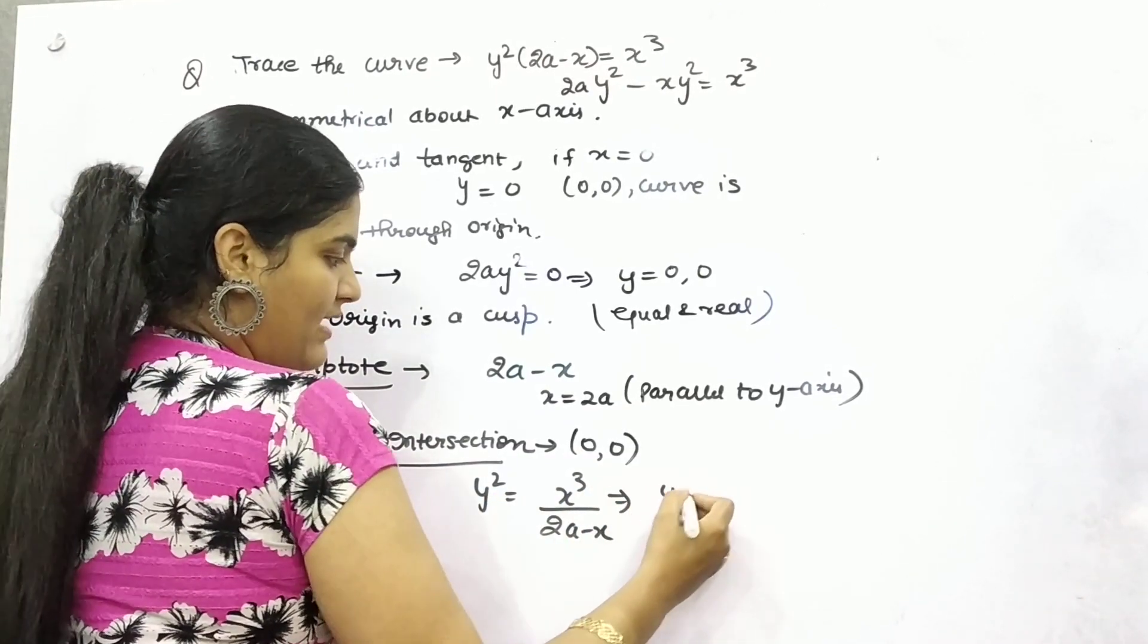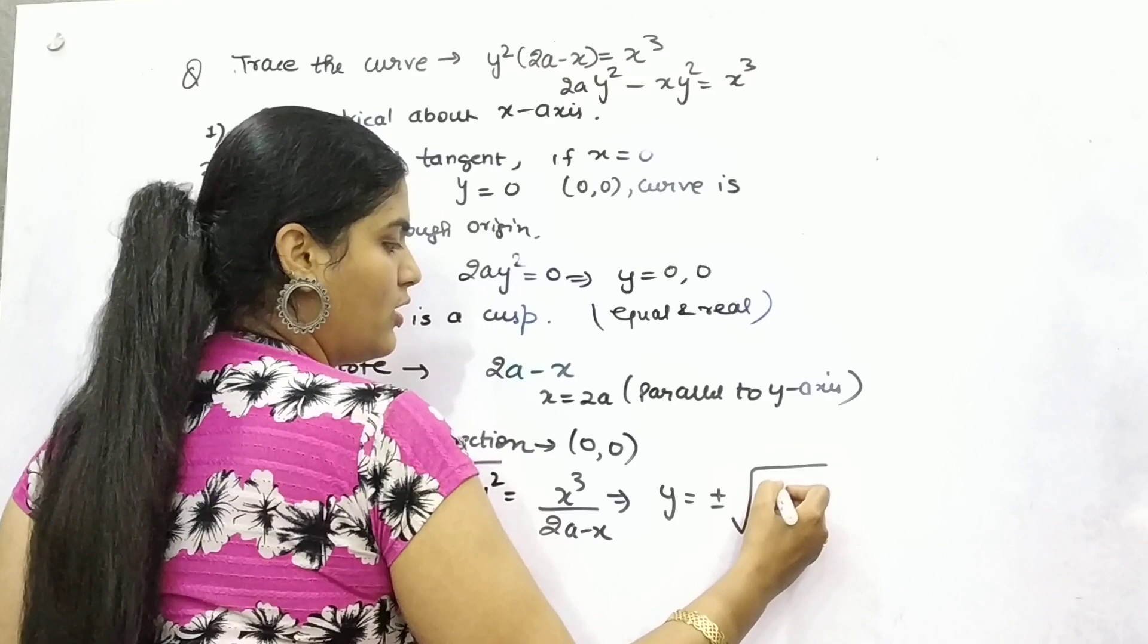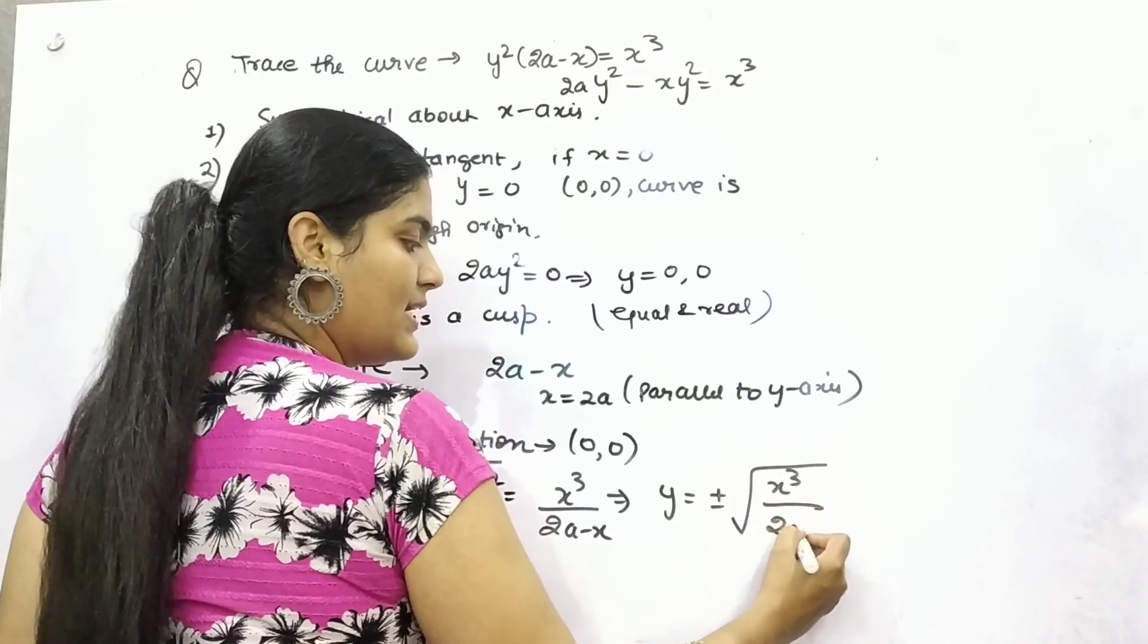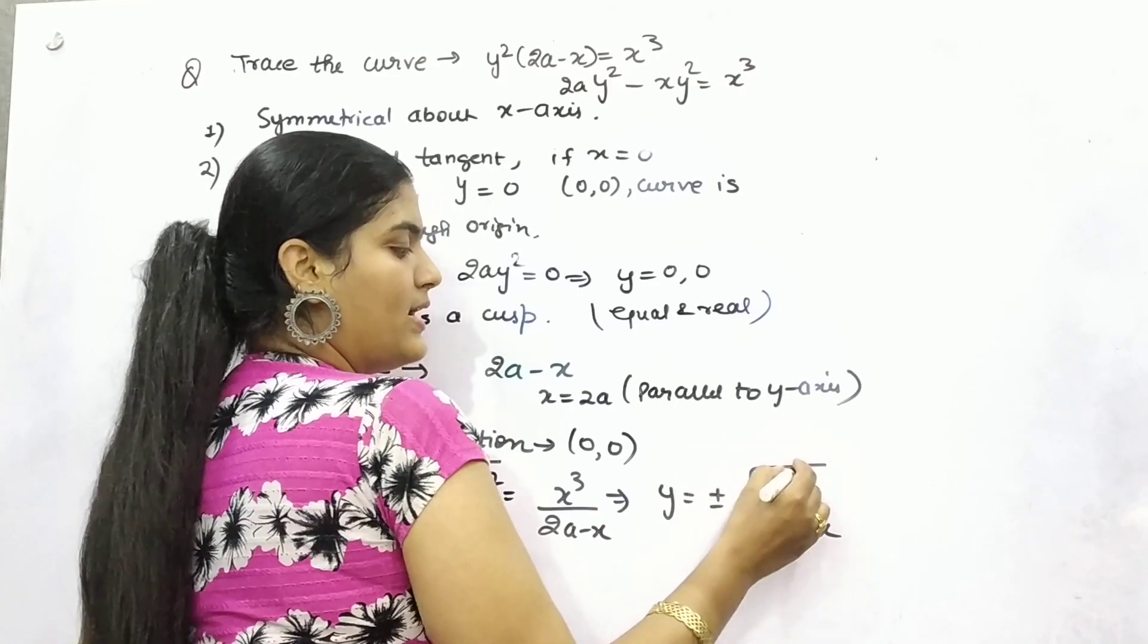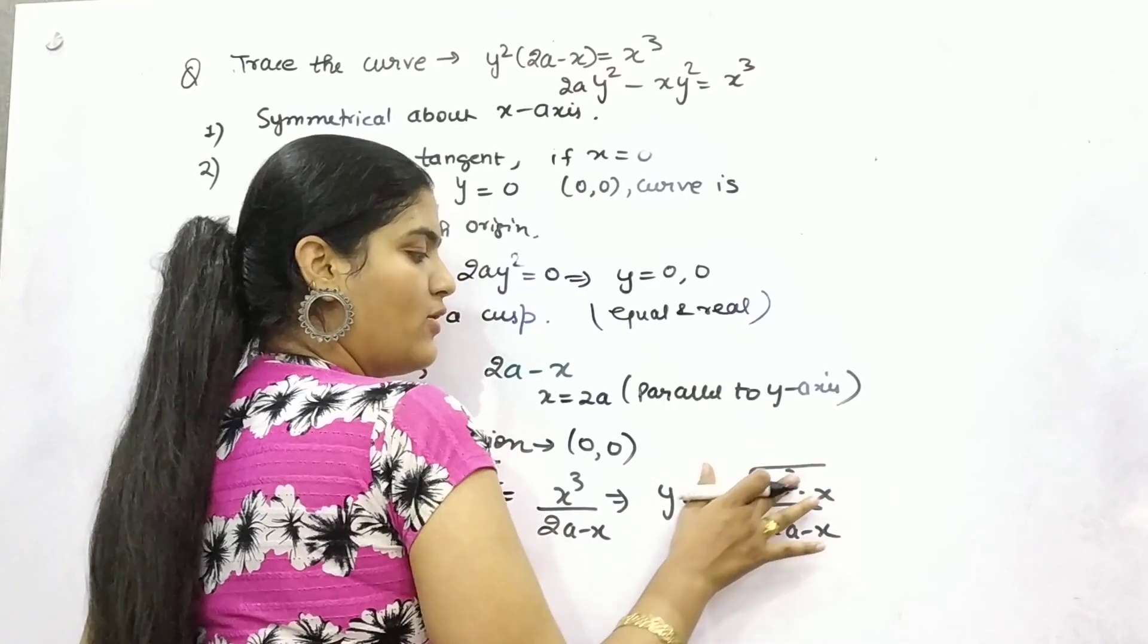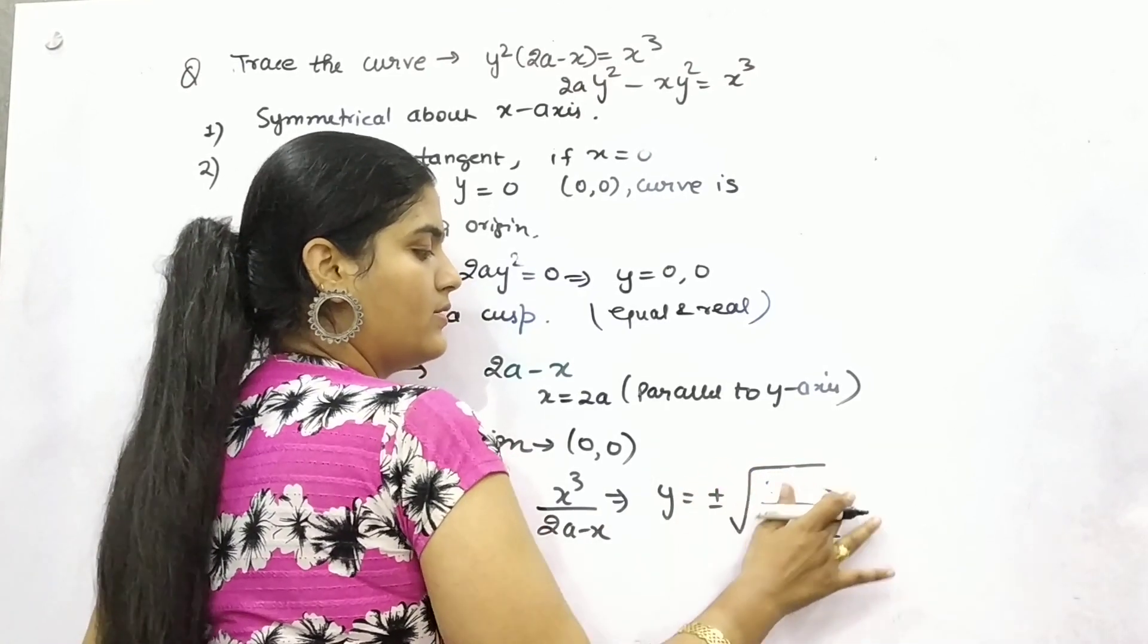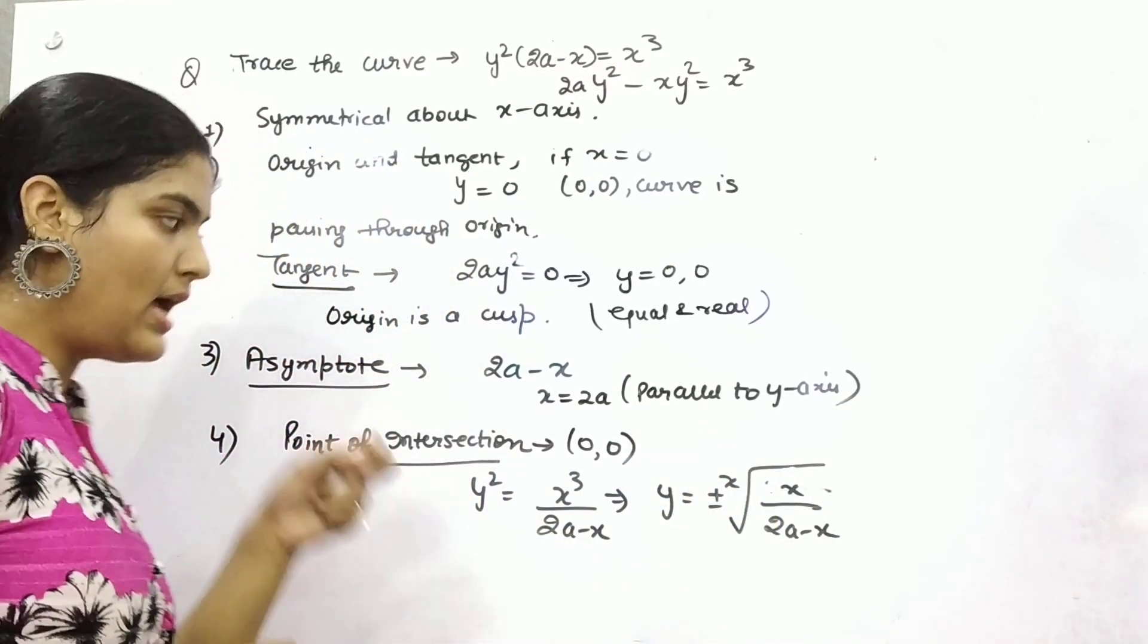So y will be ±√(x³/(2a - x)). Now you can write it as x² × x and you can take your x² out as x.